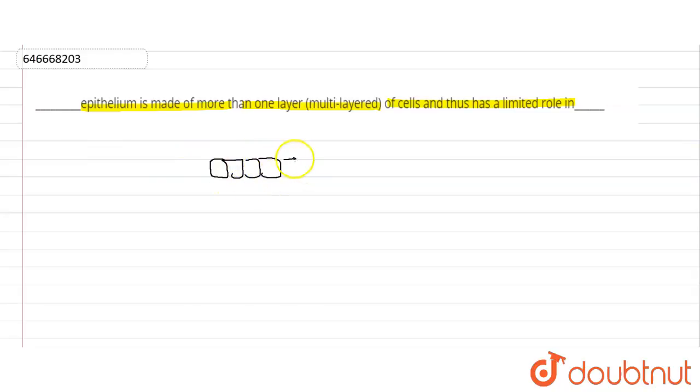It means that only one layer, single layer of the epithelium is present, and hence it will be called as the simple cuboidal epithelium. Simple cuboidal epithelium.